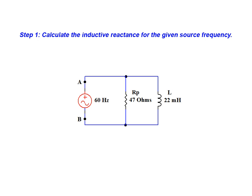We begin the conversion by calculating the inductive reactance for the given source frequency and our original parallel circuit. As can be seen by the results of this calculation, the inductive reactance in the parallel version of the circuit is equal to 8.294 ohms.